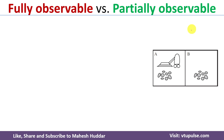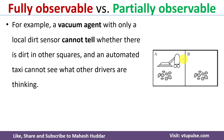We will take an example to understand fully observable and partially observable environments. We will consider the vacuum agent. There are two locations, A and B. A and B may or may not be dirty, and there is an AI agent which may be present in location A or location B. Whenever the AI agent senses dirt in a particular location it executes a suck action to clean the room. If the sensor can sense both location A and location B — the complete environment — then it is called fully observable.